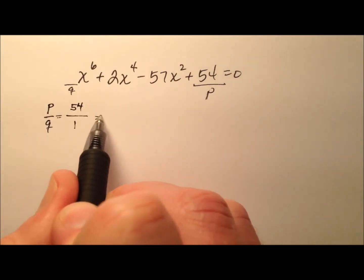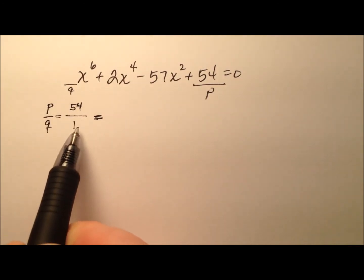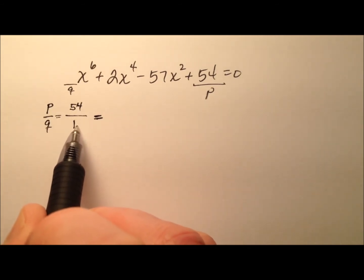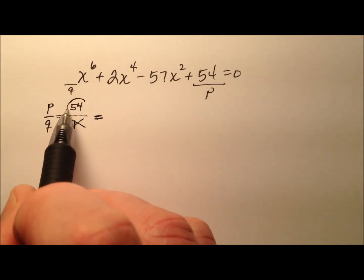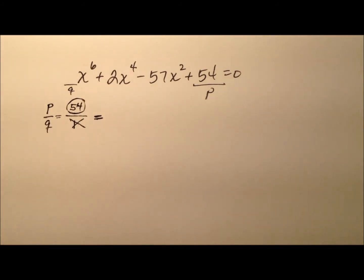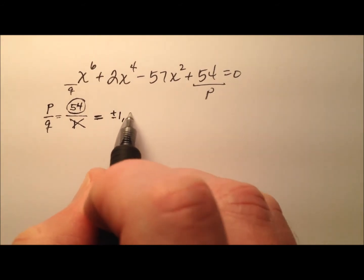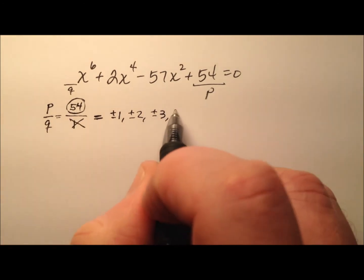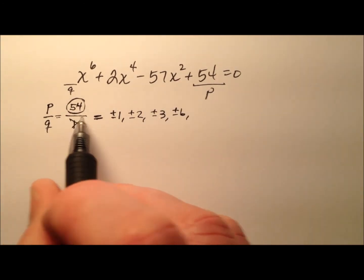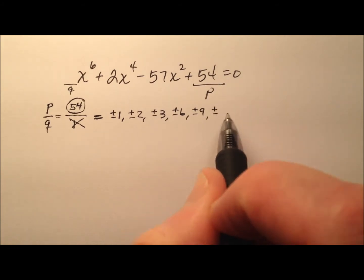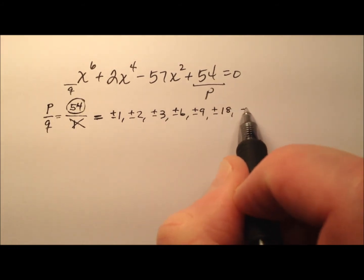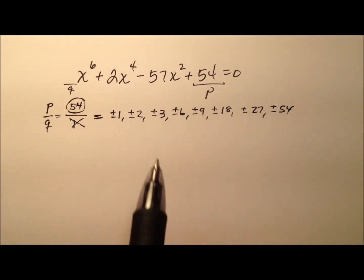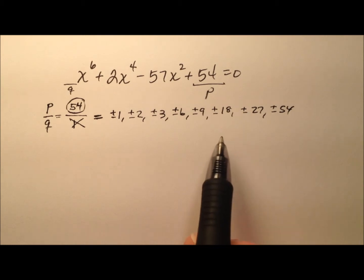So I'm going to consider all the factors, positive and negative, of 54, and all the factors, positive and negative, of 1. Of course, 1 is just 1 and negative 1, so I don't even care about that because the P factors will cover all the possibilities. So we have plus or minus 1, plus or minus 2, plus or minus 3 — 4 or 5 will not work — plus or minus 6, 7 and 8 will not, plus or minus 9, plus or minus 18, plus or minus 27, and plus or minus 54. We've got a lot of values to choose from.